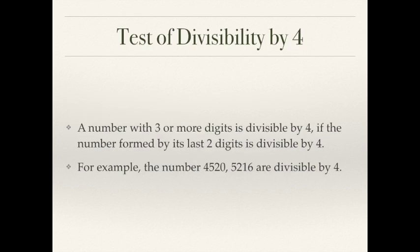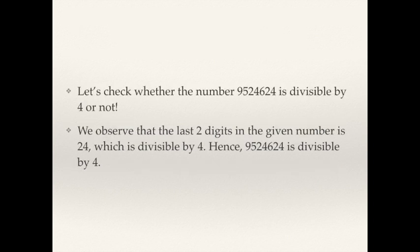Now the test of divisibility by 4: a number with 3 or more digits is divisible by 4 if the number formed by its last 2 digits is divisible by 4. For example, 4520 — the last 2 digits are 20, and 20 is divisible by 4, so 4520 is also divisible by 4. For the large number 95,24,624, the last 2 digits are 24, which is a multiple of 4, hence this number is also divisible by 4.